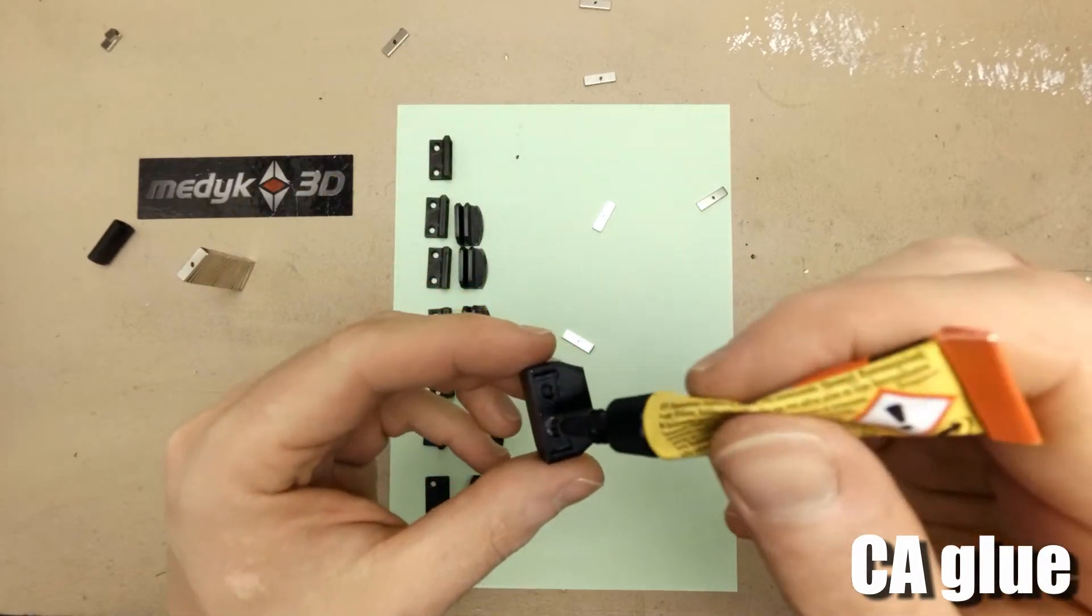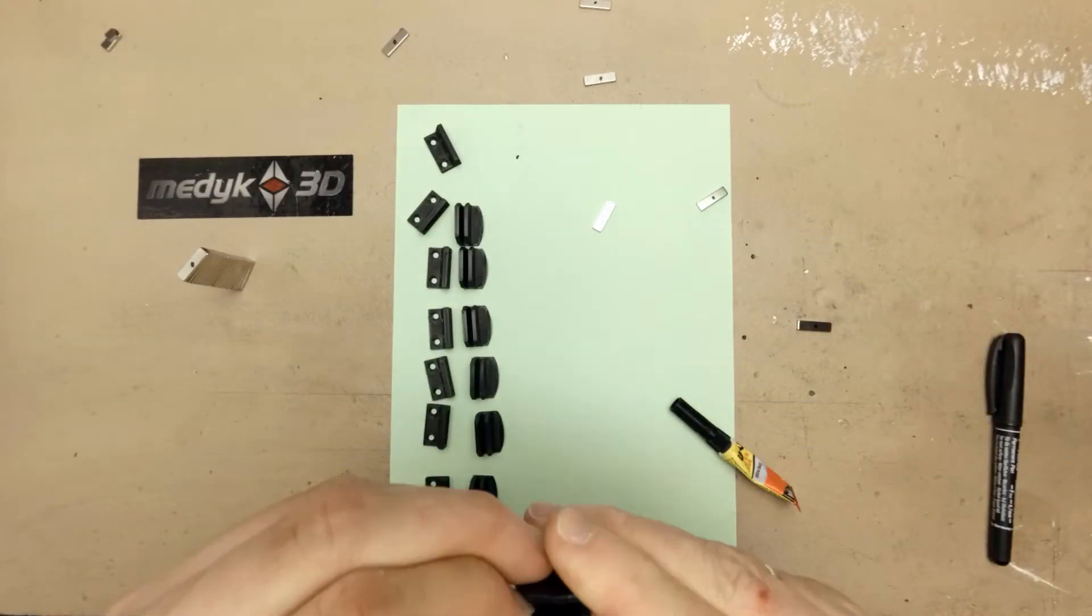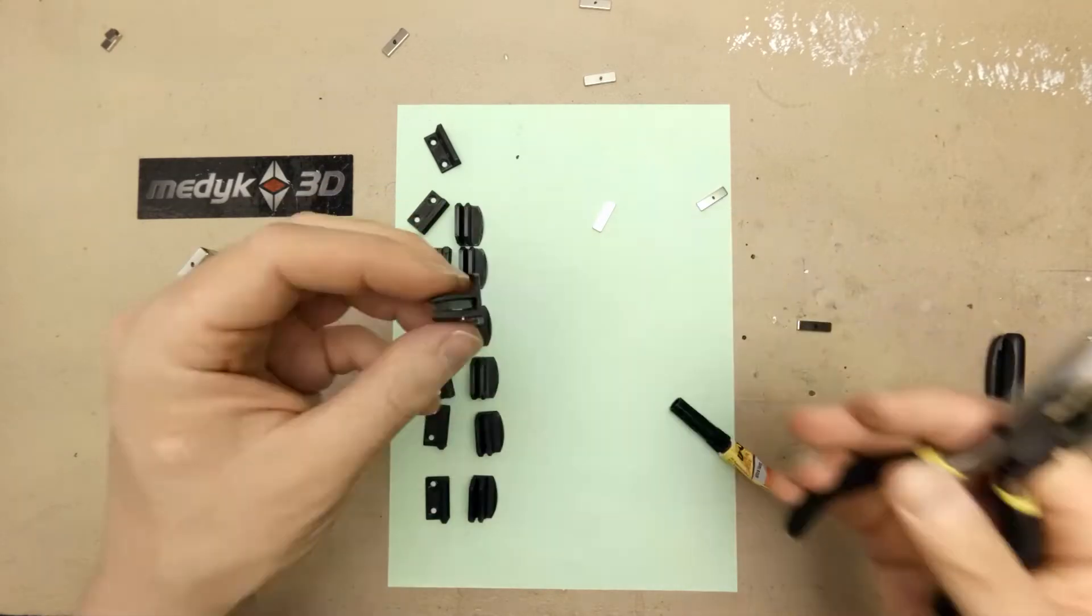While gluing the magnets, be sure to position them all the same way, so every A and B part can fit together.